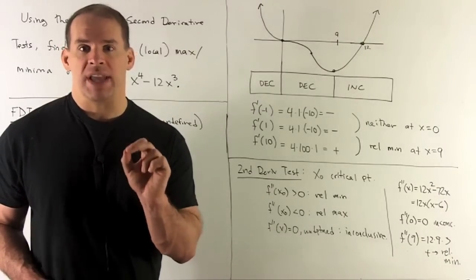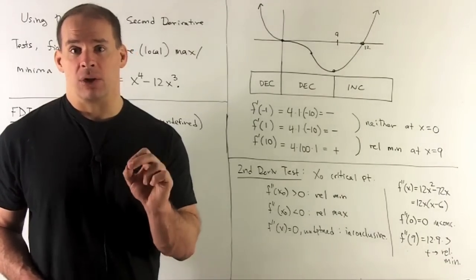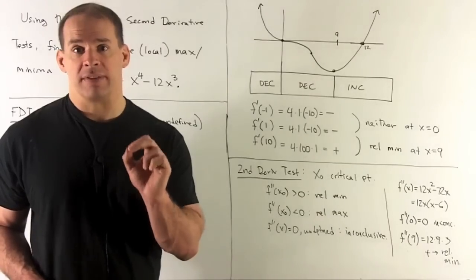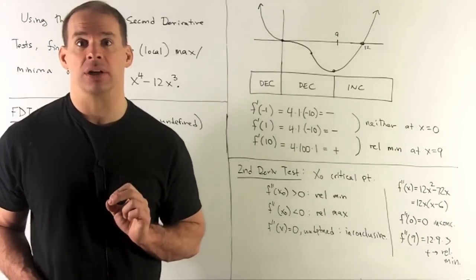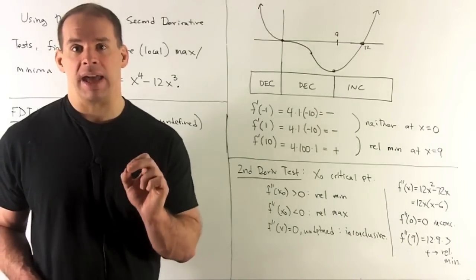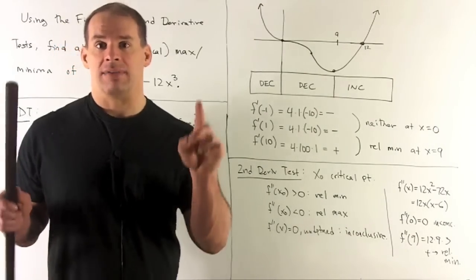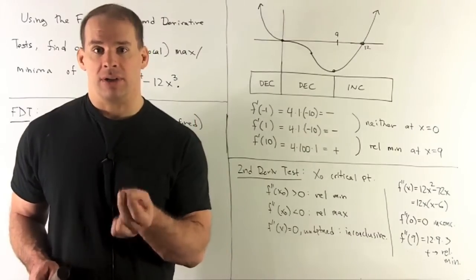Now note, the answer here is not that we have neither a relative min or a relative max, it's just that we need to do more work. Second derivative test can't tell us the answer. We check the critical point at 9. We get a positive number out, so that means concave up, and then I have a relative minimum.